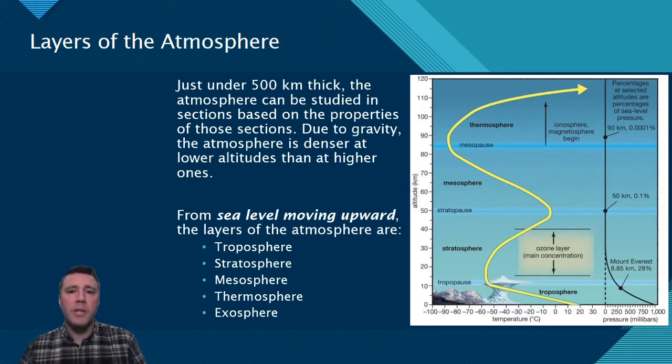The troposphere extends up to a height of about 12 kilometers. Although the temperature decreases as you travel higher in the troposphere, it is still the warmest section of the Earth's atmosphere, contains nearly all atmospheric water vapor, and is the layer where most of Earth's weather occurs. Even the tallest of Earth's mountains are contained within the troposphere, and all commercial air travel takes place within it.